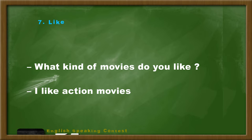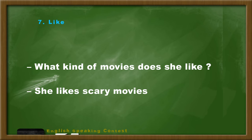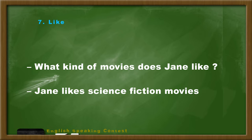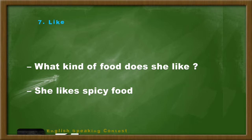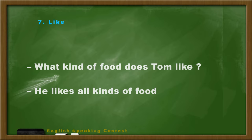What kind of movies do you like? I like action movies. What kind of movies does she like? She likes scary movies. What kind of movies does he like? He likes dramatic movies. What kind of movies does Jane like? Jane likes science fiction movies. What kind of food do you like? I like Italian food. What kind of food does she like? She likes spicy food. What kind of food does he like? He likes Chinese food. What kind of food does Tom like? He likes all kinds of food.